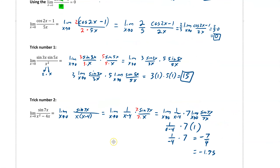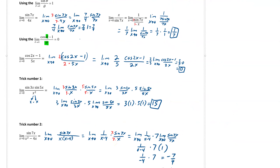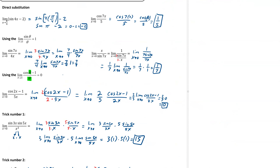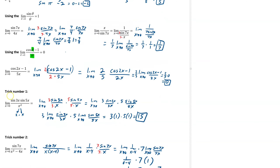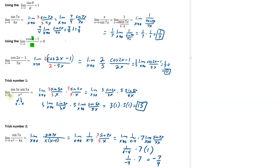So you're using basically three things here: direct substitution, and if you have sines, you're using the sine theta over theta rule and getting creative with it, and if you have cosines, you're using the cosine theta minus 1 over theta rule. Any other problem they give you is just a way to split it up in order to be able to use one of these two. Thank you.